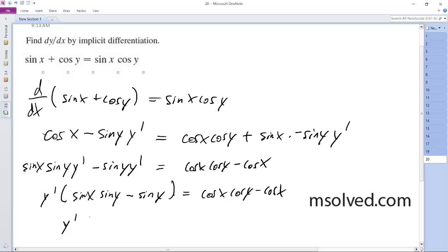Now, finally, y prime is equal to cosine of x cosine of y minus cosine of x all over sine x sine y minus sine y.